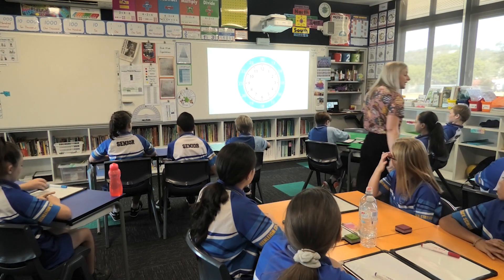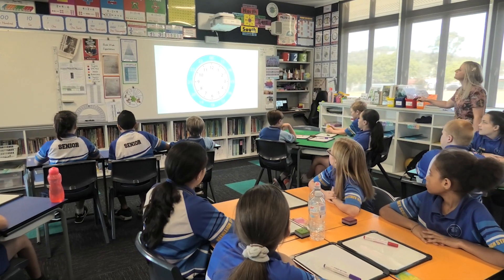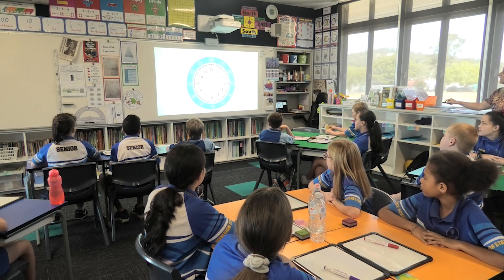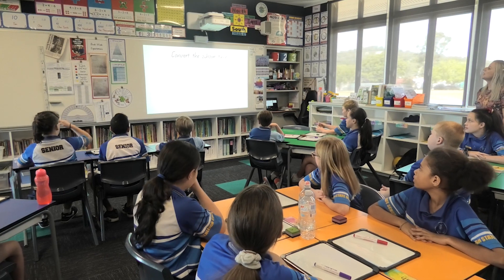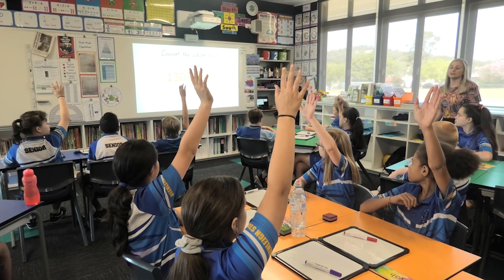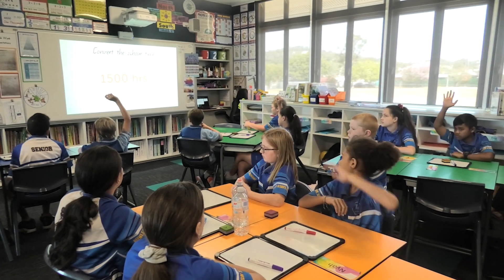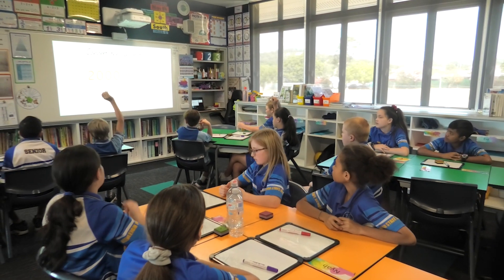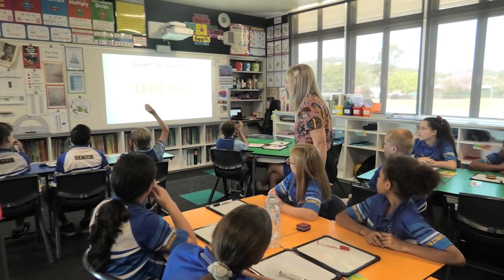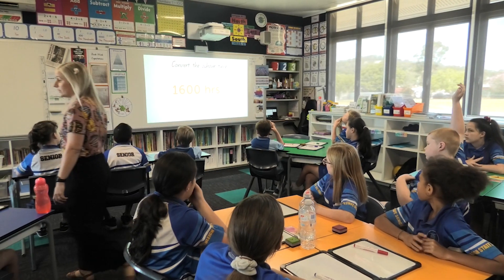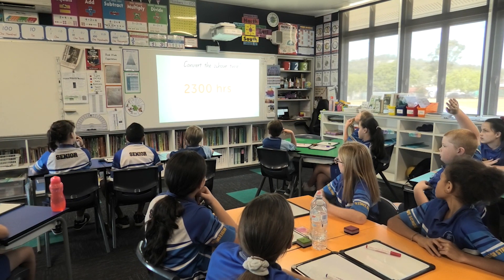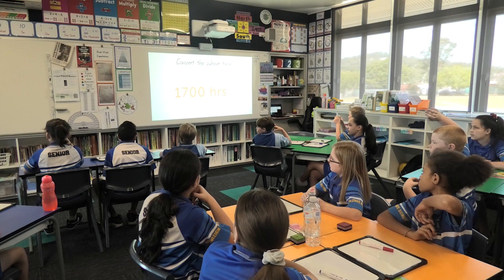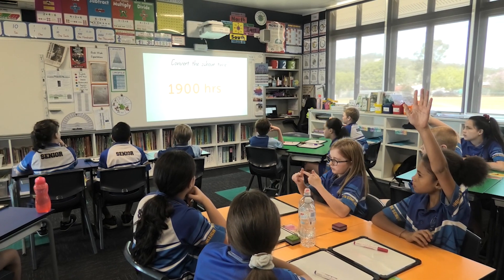Let's look at our 24 hour time. Counting in 12 hour time first. Let's go. 1, 2, 3, 4, 5, 6, 7, 8, 9, 10, 11, 12, 13, 14, 15, 16, 17, 18, 19, 20, 21, 22, 23, 24. Excellent. Convert the 24 hour time please. Angelina. 11 PM. Well done. Naya. 3 PM. Jake. 9 PM. Algen. 2 PM. Izzy. 8 PM. Mack. 6 PM. Jake. 4 PM. Sargon. 10 PM. Kai. 11 PM. Grace. Be confident. 5 PM. Well done. Naya. 7 PM.